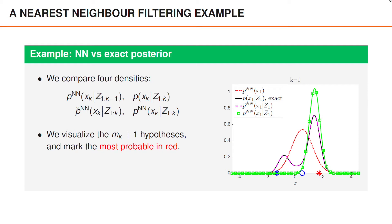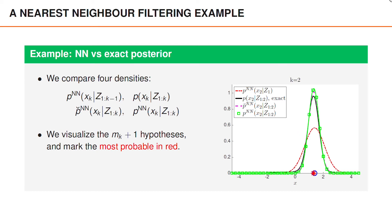At time 1, the most probable hypothesis is that the measurement at 1.7 is an object measurement. The nearest neighbor algorithm therefore acts as if we knew that the measurement at 1.7 is an object measurement. Even though all three hypotheses are reasonable, the algorithm ignores the two less probable hypotheses, and this gives rise to an approximation of the posterior that underestimates the uncertainties.